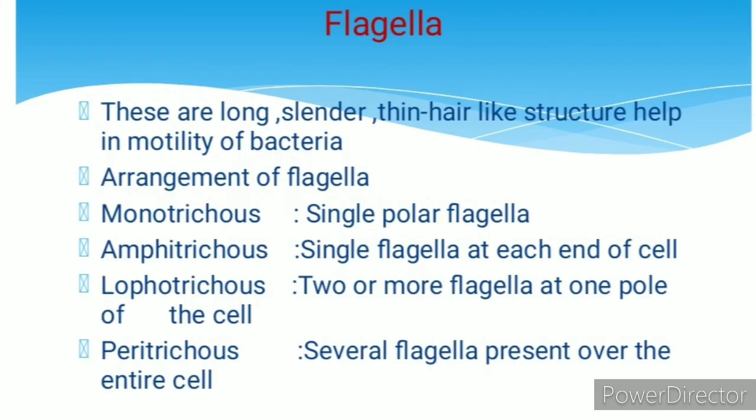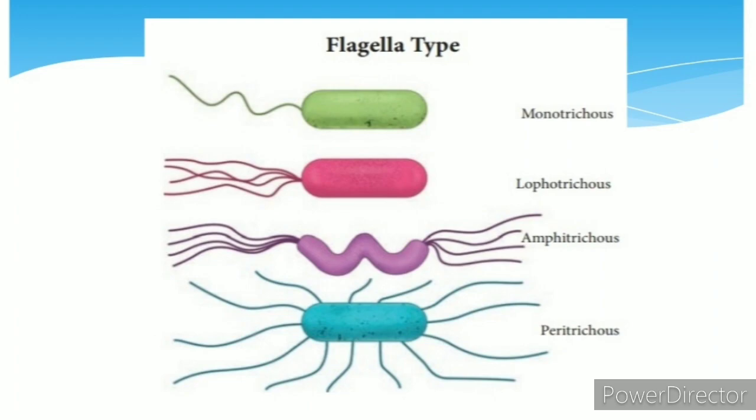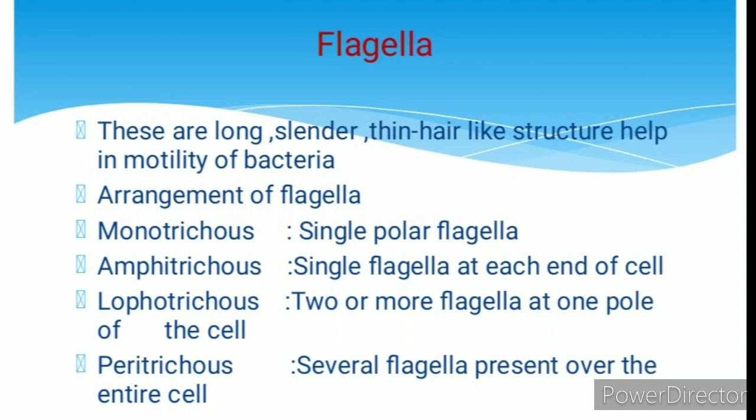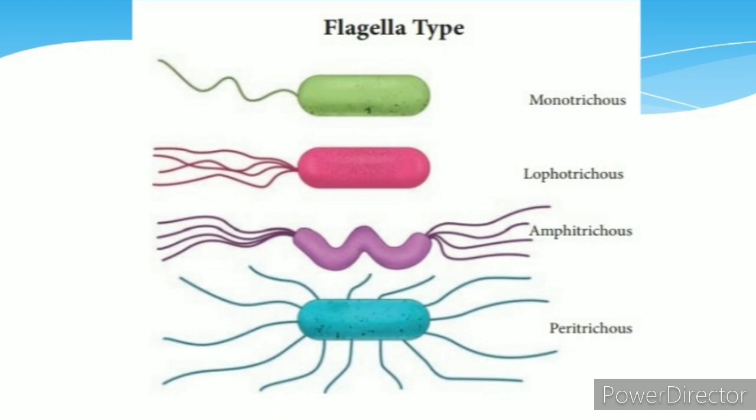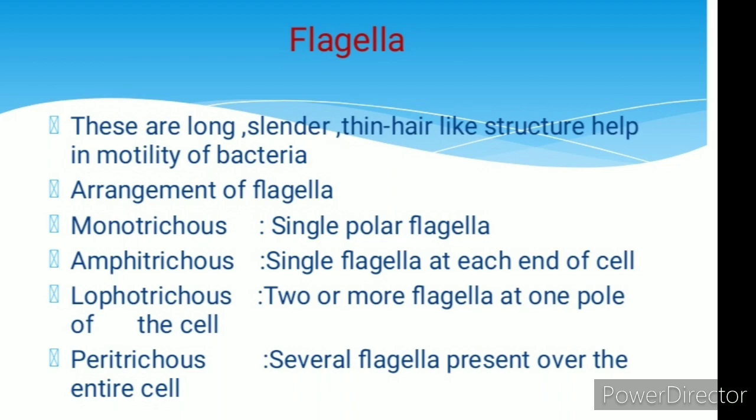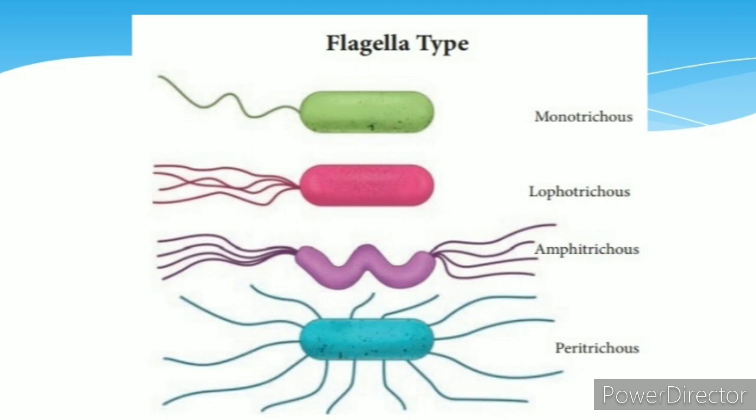Flagella are long, slender, thin hair-like structures that help in the motility of bacteria. Based on arrangement of flagella: monotrichous has a single polar flagellum; amphitrichous has a single flagellum at each end of the cell; lophotrichous has two or more flagella at one pole of the cell; peritrichous has several flagella present over the entire cell.